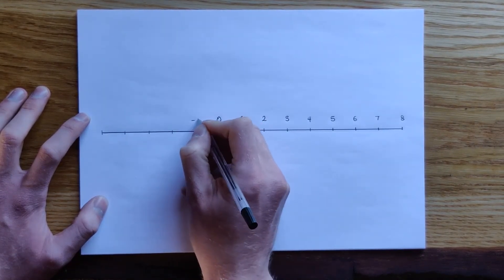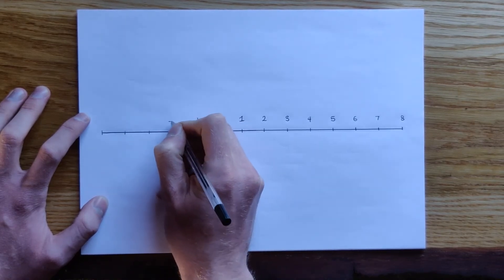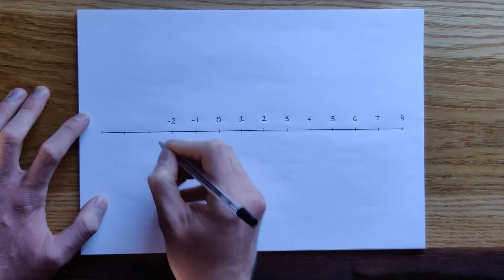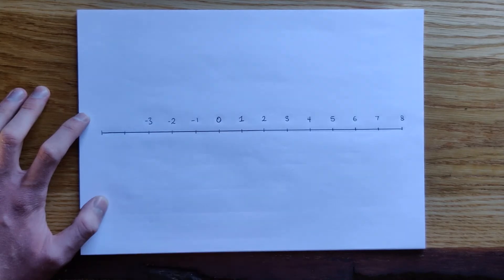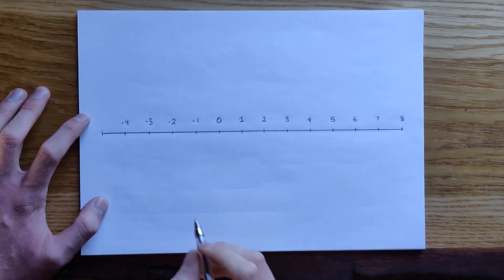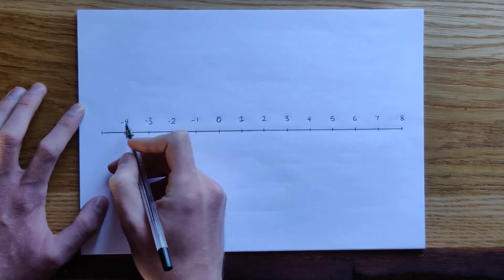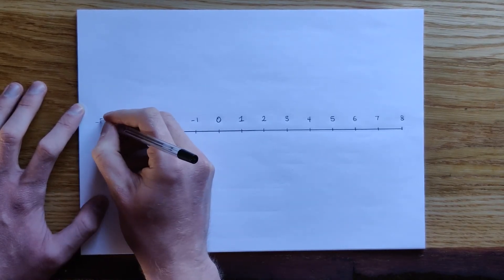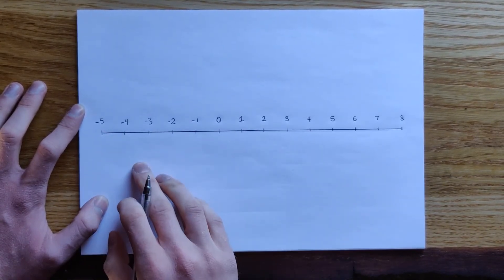So one less than zero would be minus one, two less than zero would be minus two, three less than zero would be minus three, four less than zero would be minus four, and then five less than zero would be minus five.